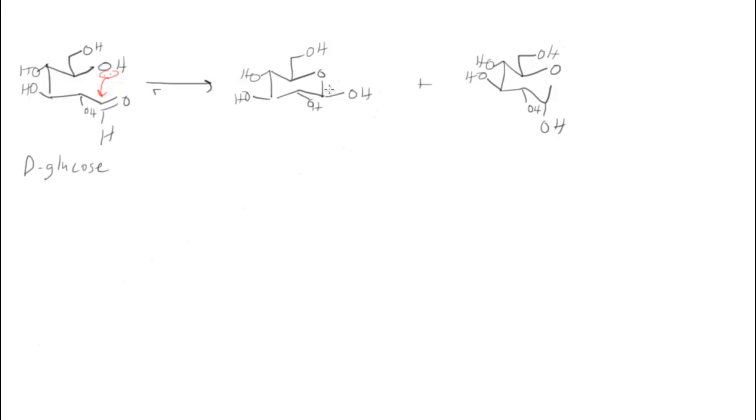Again, the only difference in the two structures is here at the anomeric carbon. In this case, the anomeric hydroxide is on the same side or as syn to the CH2OH. So here's the CH2OH. And if it's syn to CH2OH we call that beta.